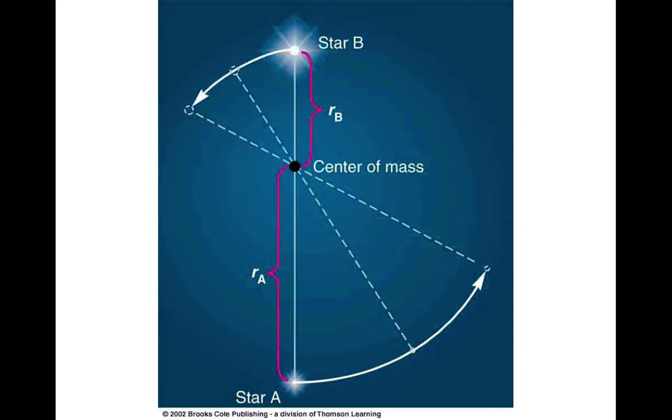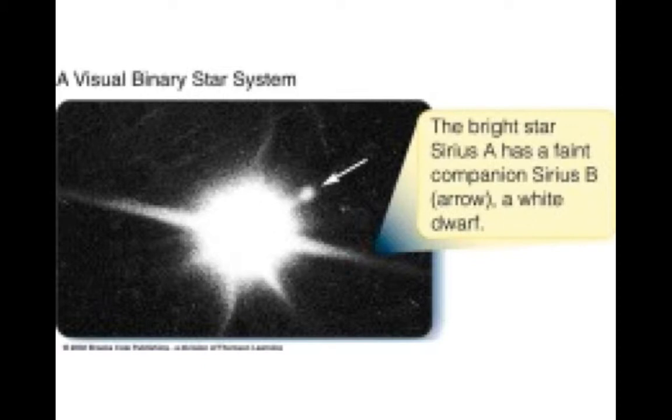Here we have an example of two stars orbiting their common center of mass at different distances based on their different masses. Here's an actual photograph of Sirius, which is a double star system with a white dwarf and a normal star. Sirius A has a faint companion, Sirius B, which you see the arrow pointed to. It's barely visible in this image because Sirius A is so much brighter. By measuring their positions over time, you can determine the masses of both.